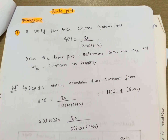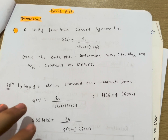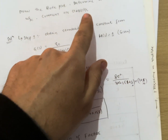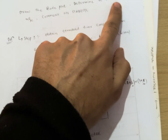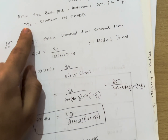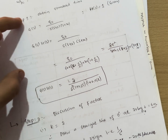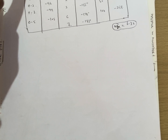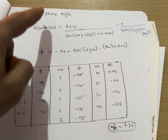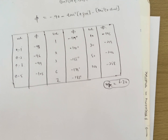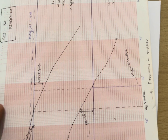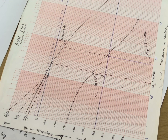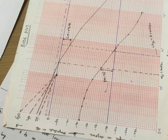For the first problem — a unity feedback control system with G(s) = 80 / [s(s+2)(s+20)] — draw the Bode plot and determine gain margin, phase margin, gain crossover frequency, and phase crossover frequency, and comment on stability. There are only three steps: Step 1, Step 2, and Step 3, which involves calculating the phase angle. Then you draw the graph. If you are able to draw this Bode plot graph, you can easily get 10 marks for the graph and 10 marks for the three steps.